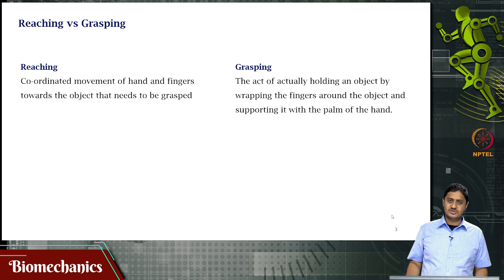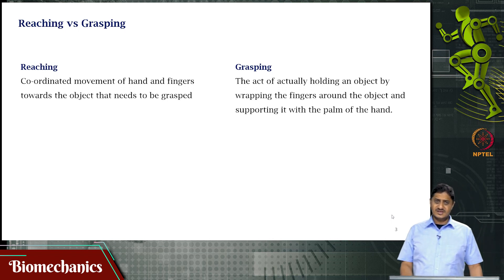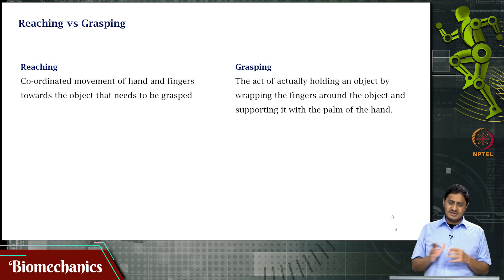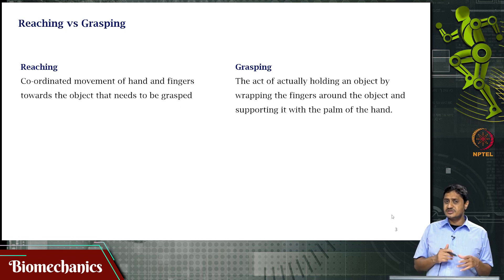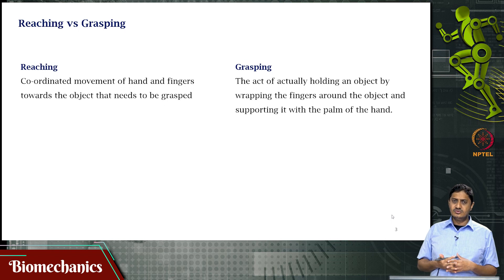The shoulder joint is actually a much more complicated joint, but for now we consider it in the same plane as the elbow. So, reaching is the coordinated movement of hand and fingers to move towards the object that needs to be grasped and manipulated.